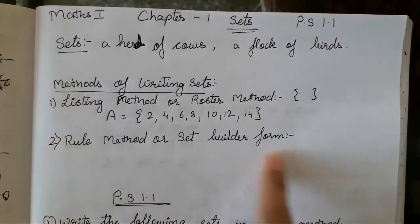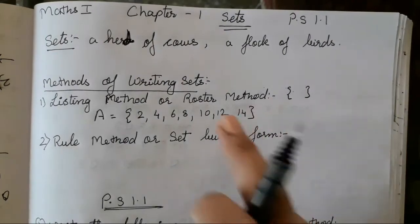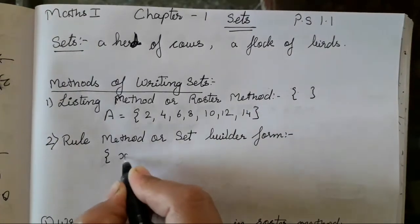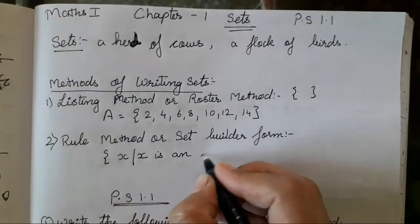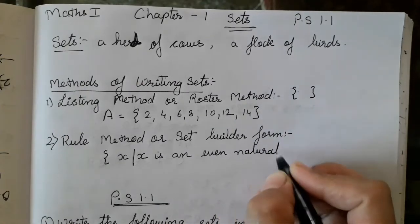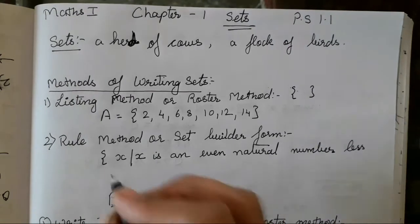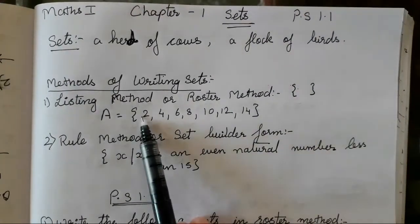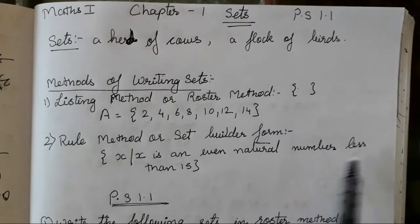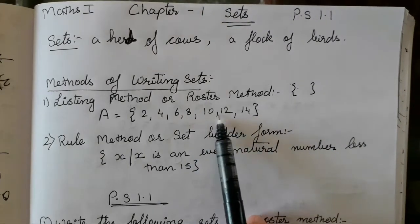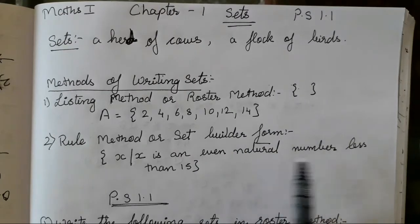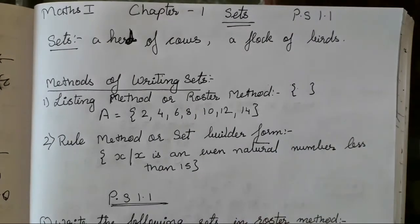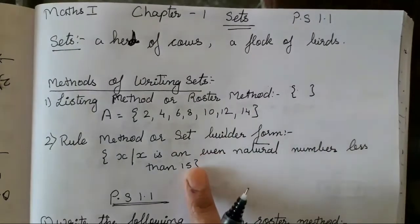Now next is rule method or set builder form. This is little different from this. Now suppose we have taken this as the listing method. The same example we will take and write X such that X is an even natural number less than 15. So we have to say from which number it has started and where it has ended. So X is an even natural number less than 15. So this is the listing method, this is the rule method or set builder form.